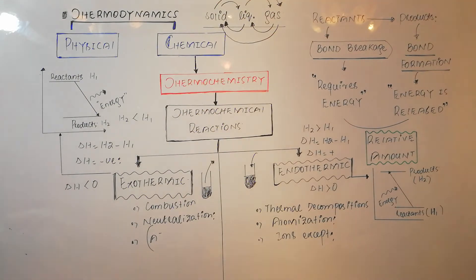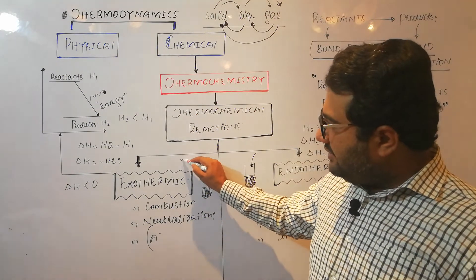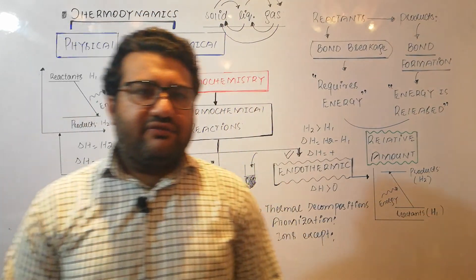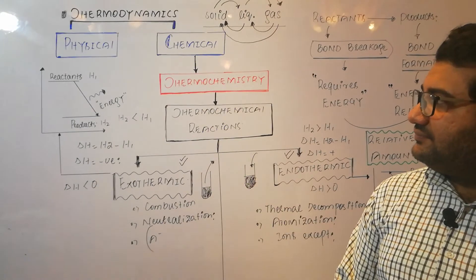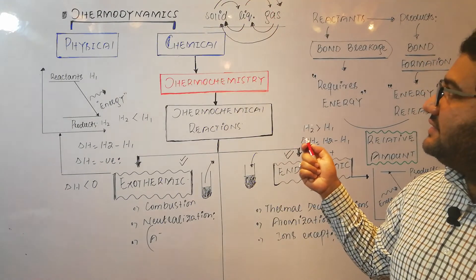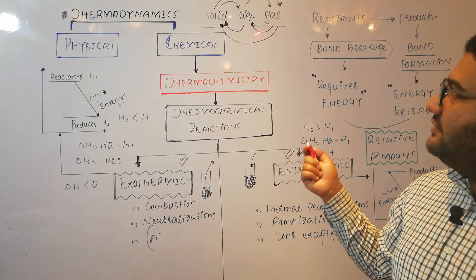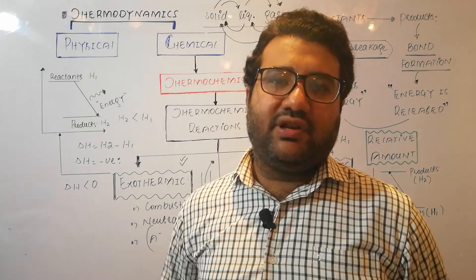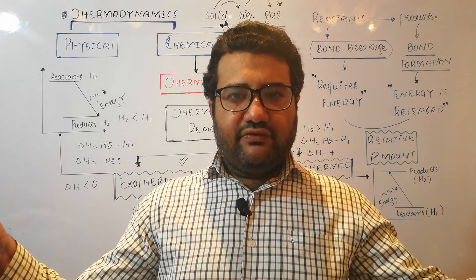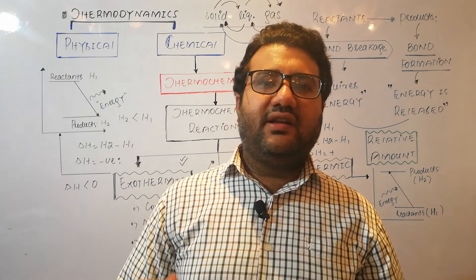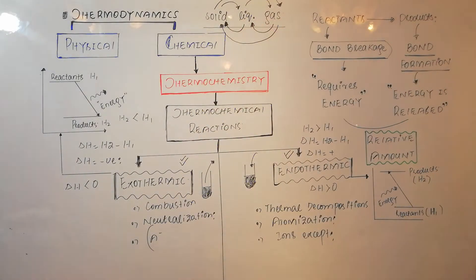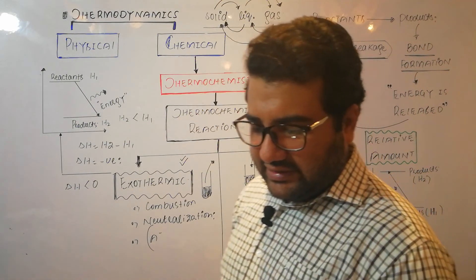Regarding entropy: in case of endothermic reactions, going from solid to liquid to gas increases disorderness, so entropy increases. But in case of exothermic processes, disorderness decreases, so entropy also decreases. Entropy simply means disorderness. For example, if you take a spring and pull it from both sides, it straightens out and the disorderness decreases — we say entropy has decreased. This comparison of exothermic and endothermic processes covers entropy as well.